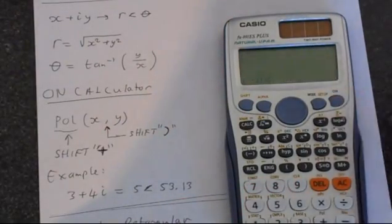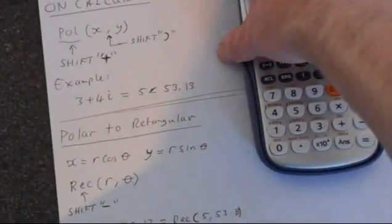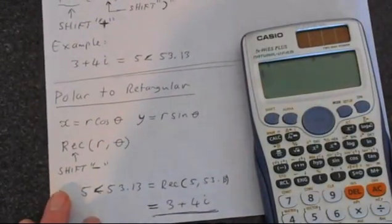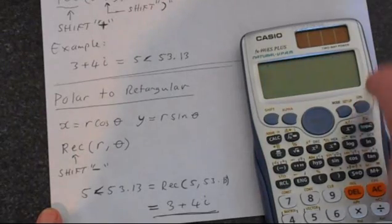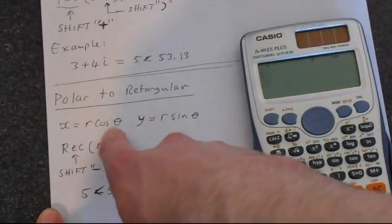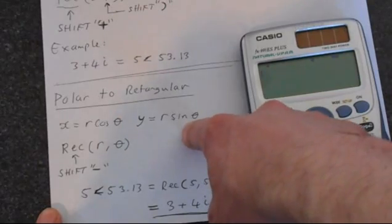To do it the other way, it's also very simple. So we'll move this down to here. So we're going from polar form to rectangular. So the theory is just x equals r cos theta, and y equals r sin theta.